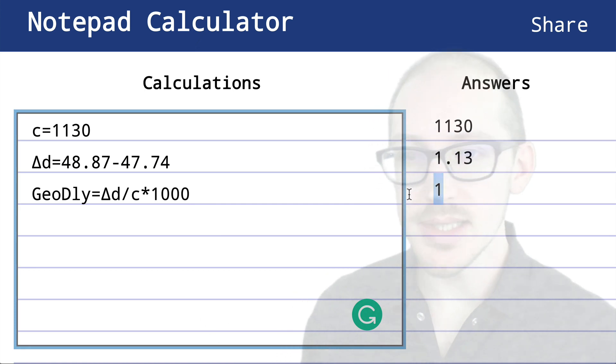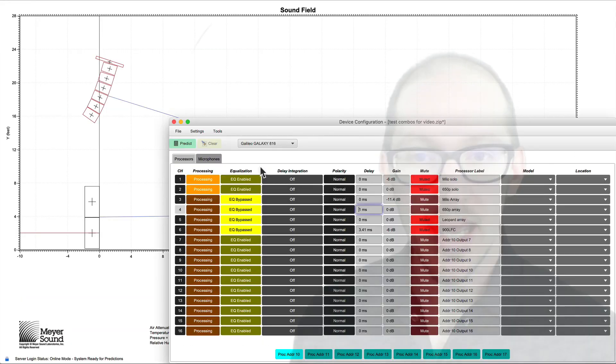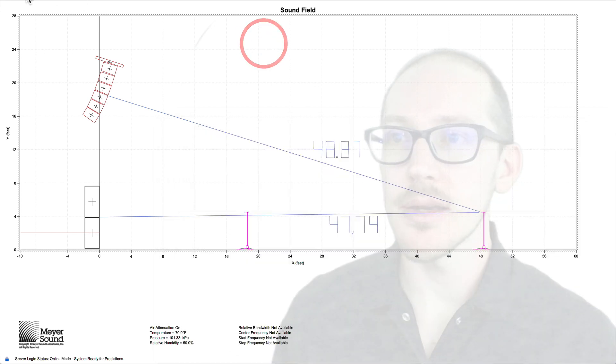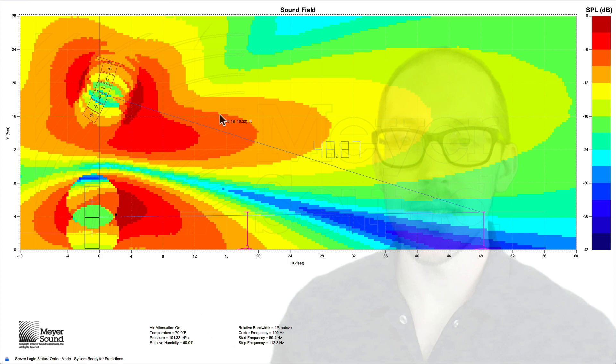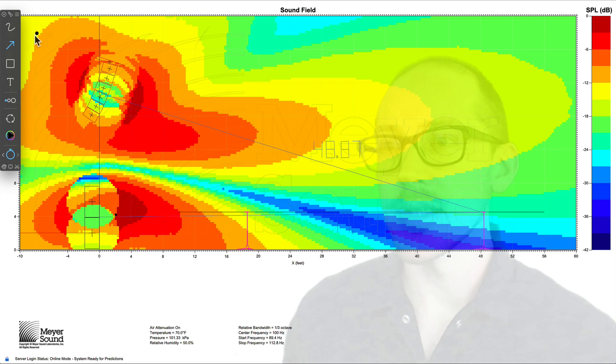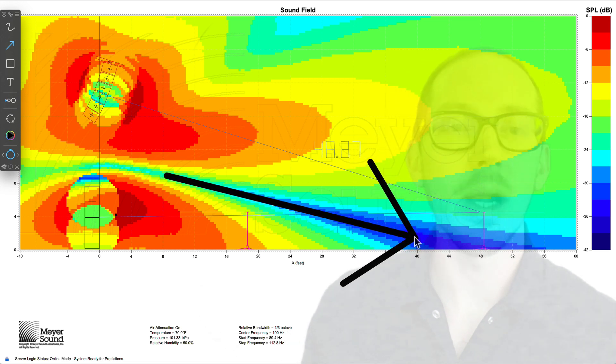So that's pretty easy, 1 millisecond. You already know what's going to happen if you saw the previous video. But if I put 1 millisecond into my delay here and we look at the prediction at 100 hertz, we're going to see that we do not, in fact, have summation through the audience plane. We have this big ugly null right in the middle of the audience. So this is not the result that we want.